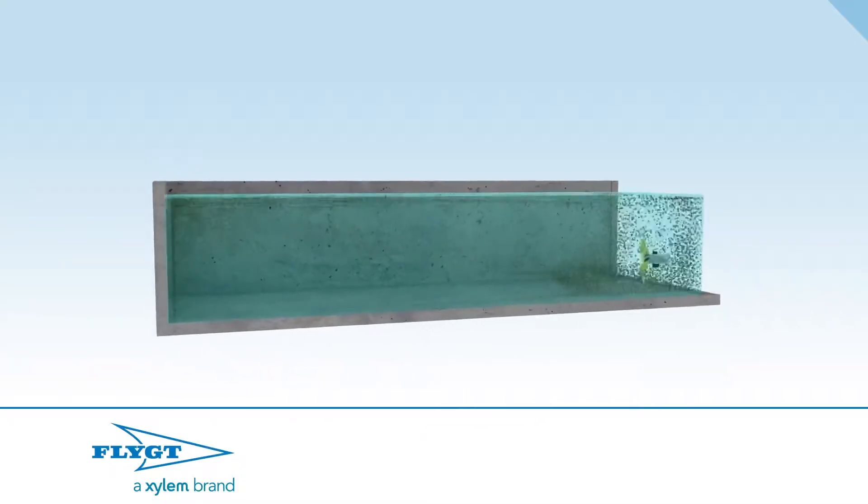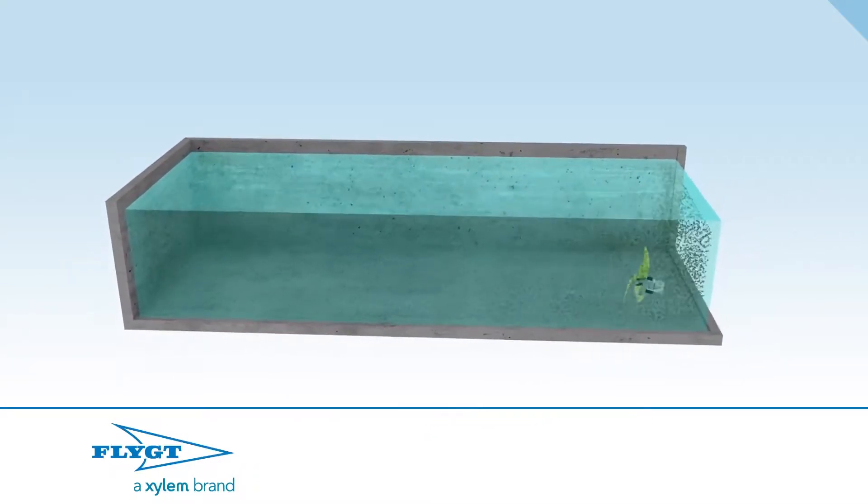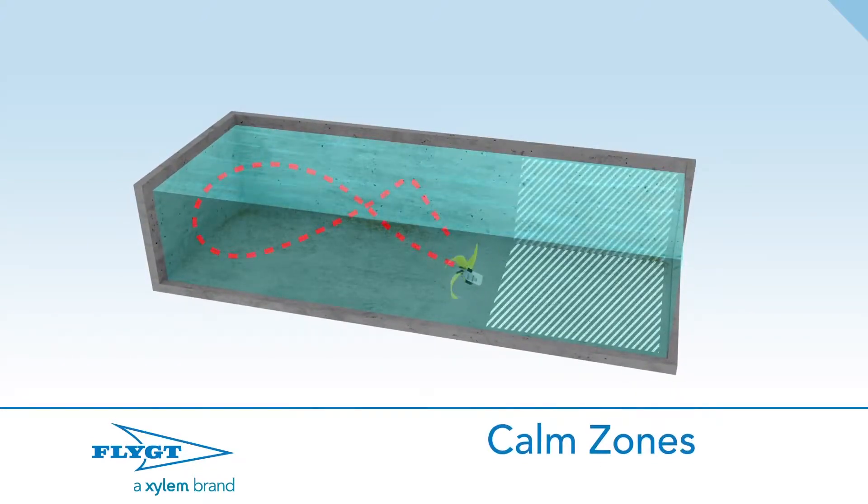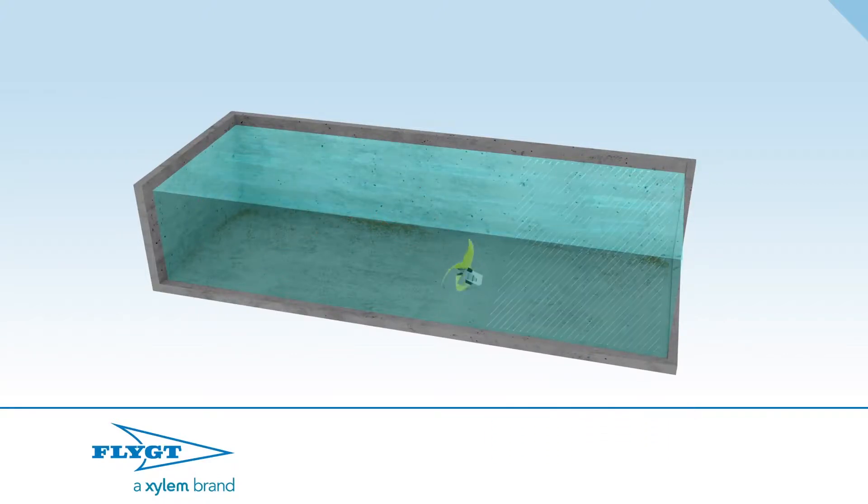Movement of the water depends on where the jet is positioned in the tank. If placed improperly, the jet will be less effective, creating calm zones. This can be corrected by increasing the speed of the mixer or repositioning it. However, you will use more energy than required if the mixer is not positioned correctly.